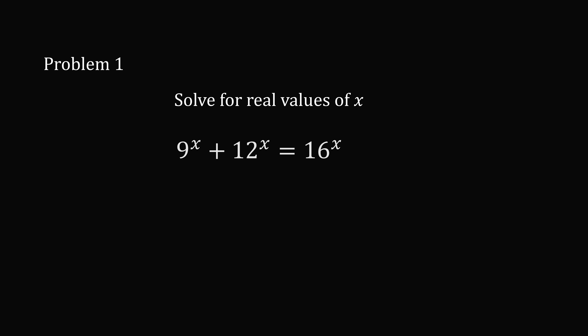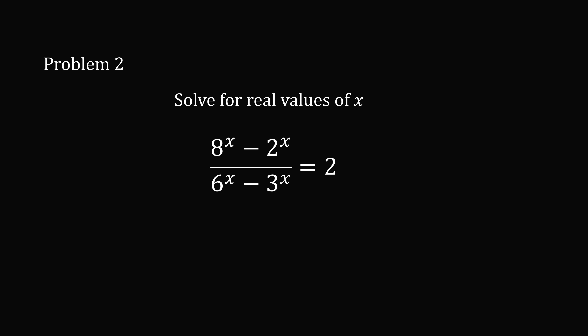Problem 1: Solve for real values of x such that 9 to the power of x plus 12 to the power of x is equal to 16 to the power of x. Problem 2: Solve for real values of x such that 8 to the power of x minus 2 to the power of x, all over 6 to the power of x minus 3 to the power of x, is equal to 2. Pause the video if you'd like to give these problems a try, and when you're ready, keep watching to learn how to solve them.